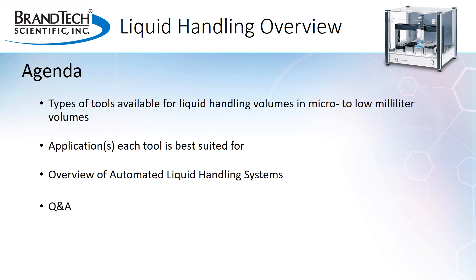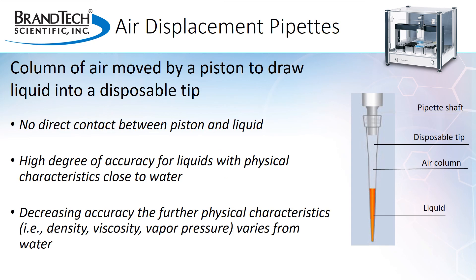The first tool we'll discuss, air displacement pipettes, are used in many labs and for a wide variety of applications. They really are the workhorse of the lab and are available in volumes ranging from 0.1 microliter up to 10 mils. As the name implies, it is a column of air that does the actual work of moving the liquid. The piston in the pipette moves the air column, allowing liquid to be drawn into the disposable tip and then dispensed out. With an air displacement pipette, there should never be any direct contact between the liquid and the pipette or piston. If liquid is drawn into the pipette for some reason, the pipette must be cleaned before further use to maintain proper performance and accuracy.